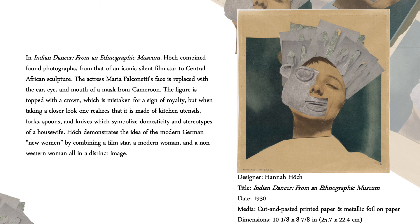This photomontage called "Indian Dancer" from 1930 is a figure that is a combination of a film star, a modern woman, and a non-Western woman, topped with a crown that could be mistaken for royalty. But if you take a closer look at the crown, it's actually made out of kitchen utensils — forks, spoons, and knives — which symbolize the stereotype of the housewife. Hannah overall brought a sensitive and sharp feminist eye, producing images that address the brutal honesty of inequalities that women were facing at the time in Berlin, Germany.